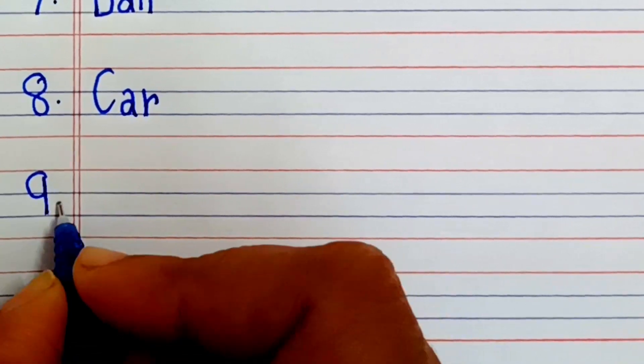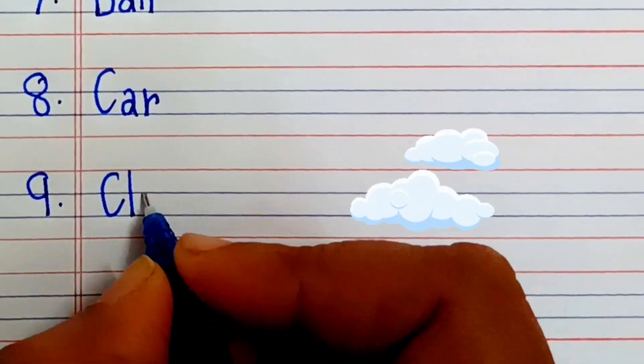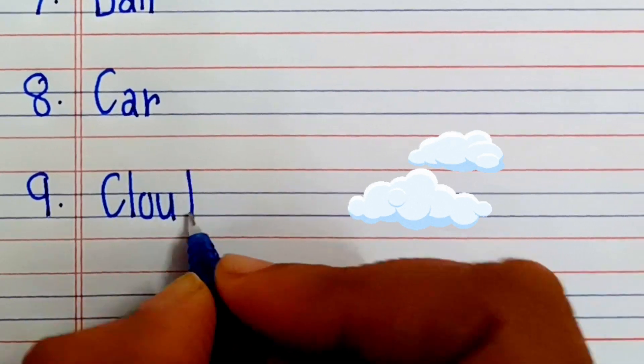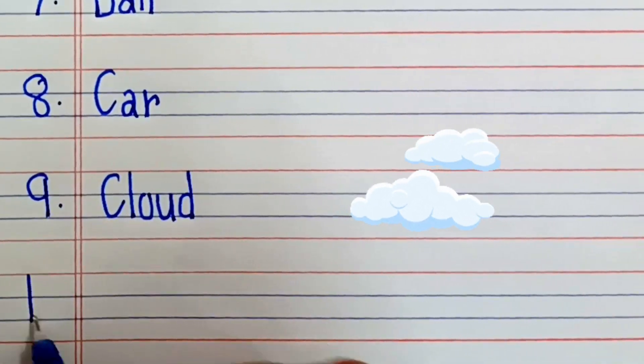Eighth one is car. C-A-R, car. Ninth one is cloud. C-L-O-U-D, cloud.